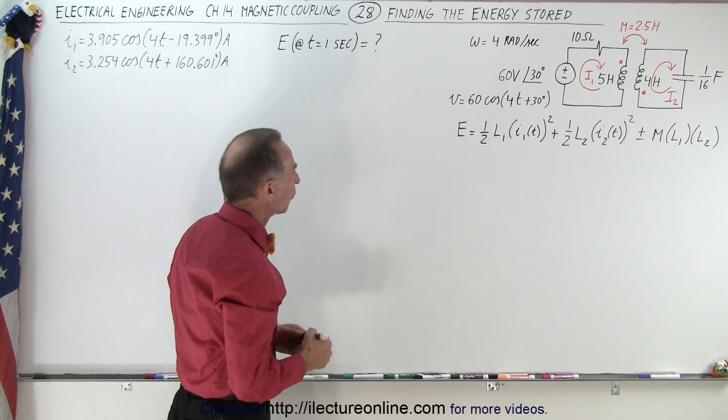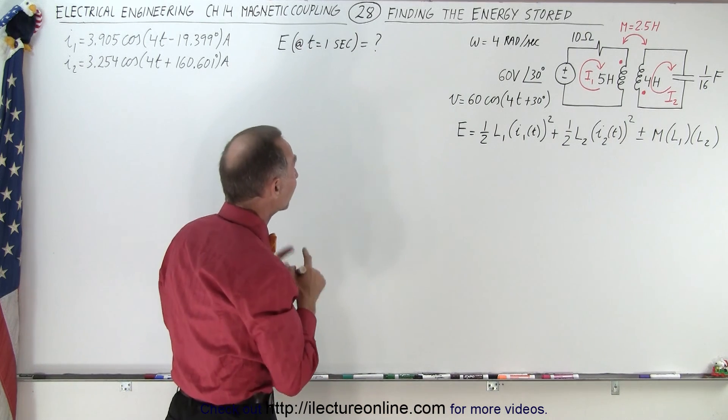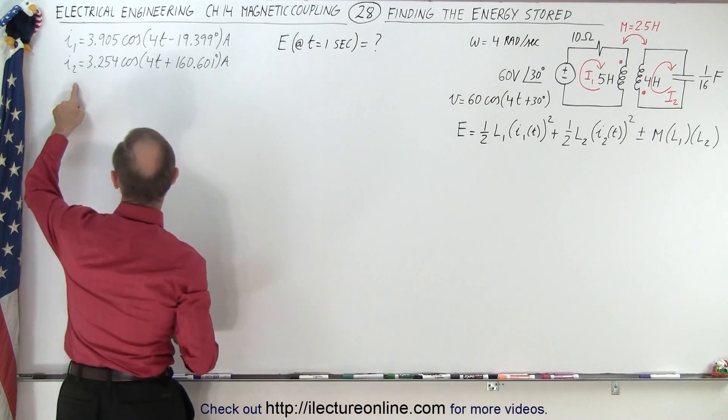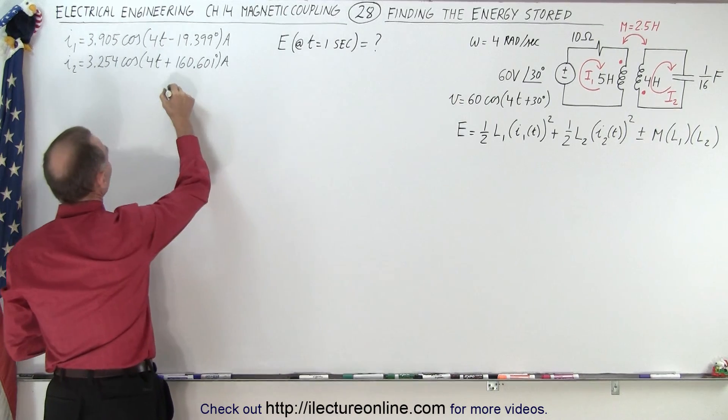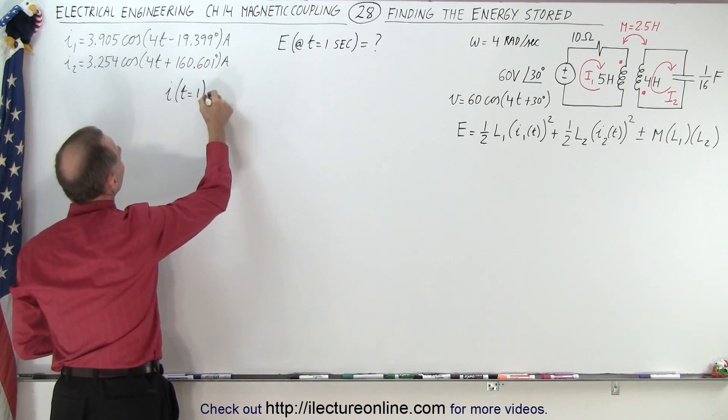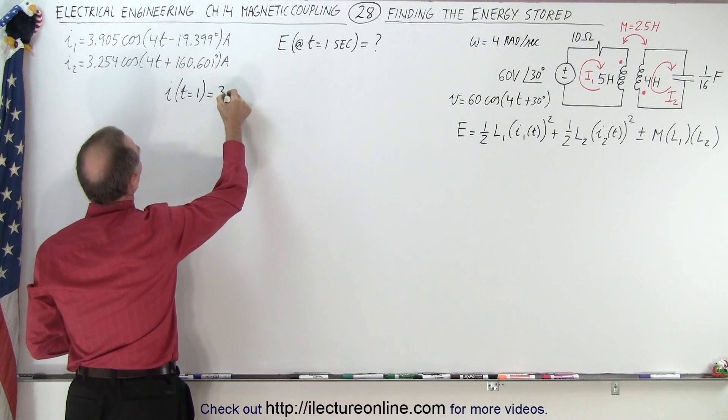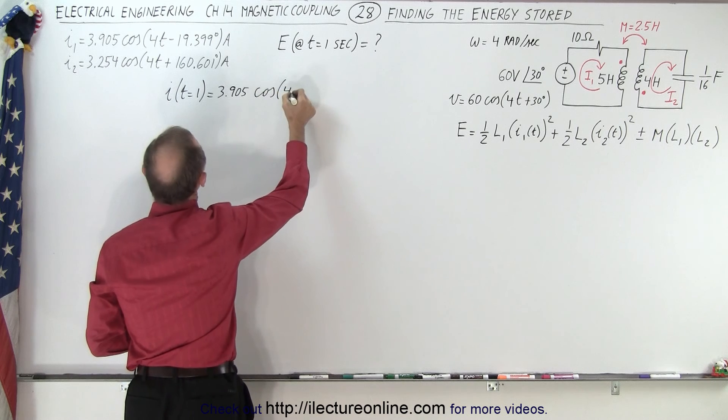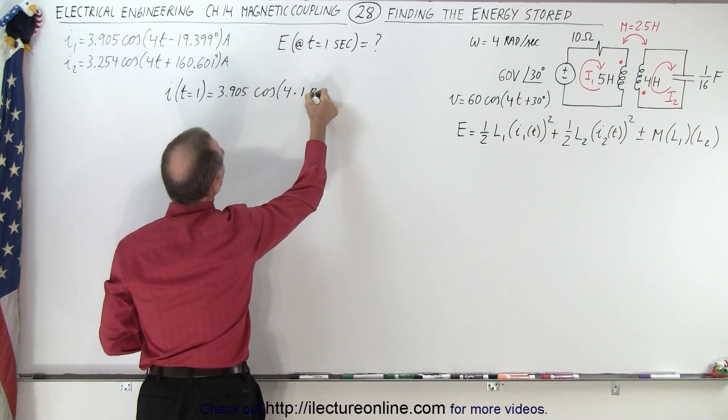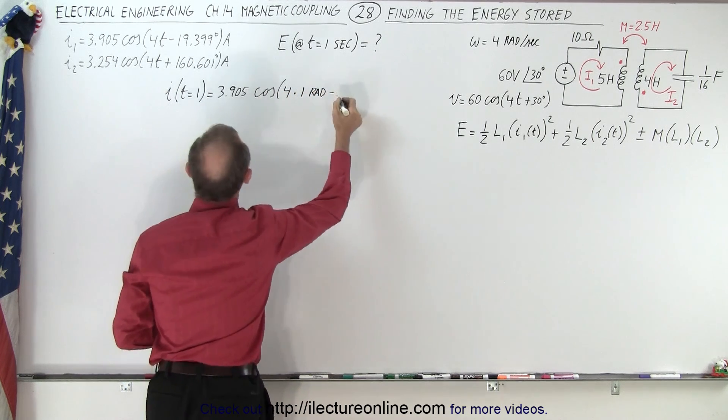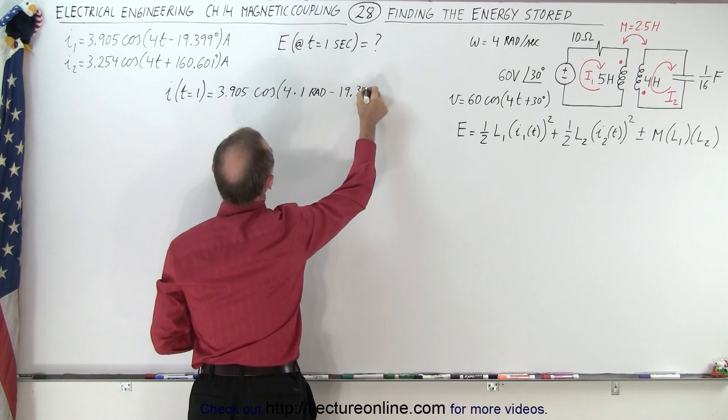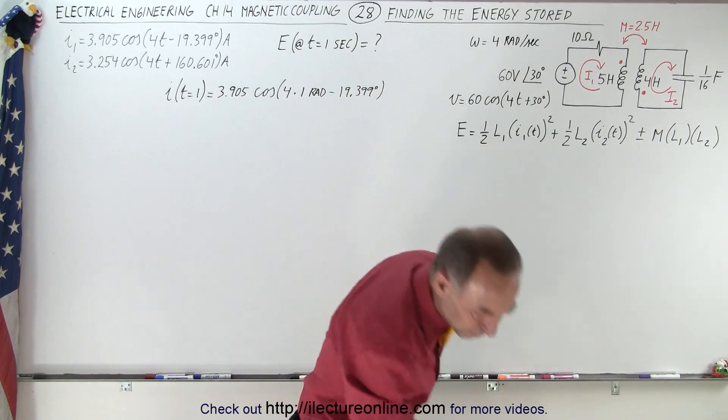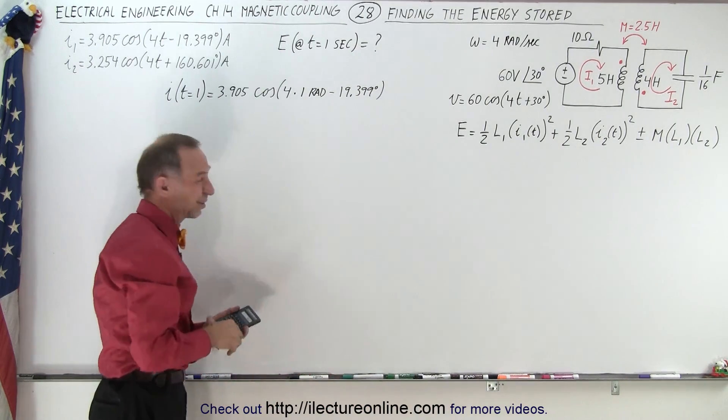First we need to find the current after one second in the circuit, so we want to find the energy when time equals one second. I when T equals one second is equal to 3.905 times the cosine of 4 times 1, that is of course in radians, minus 19.399 degrees.